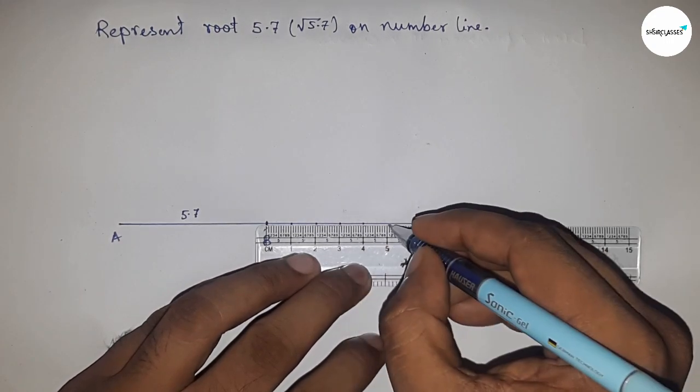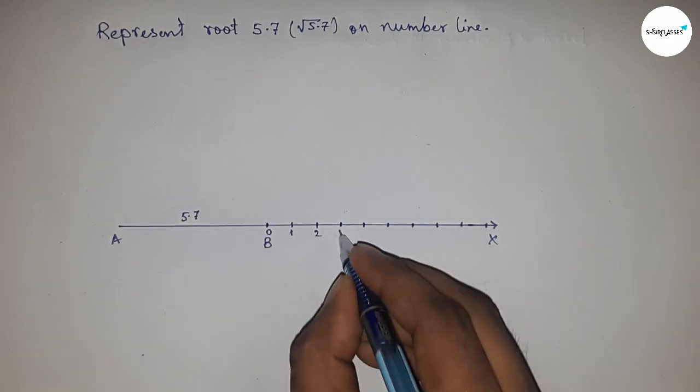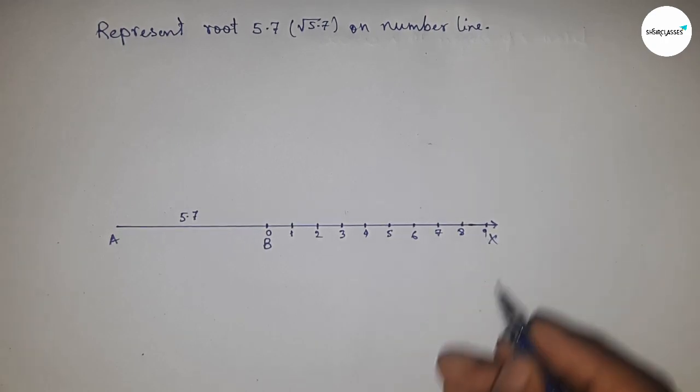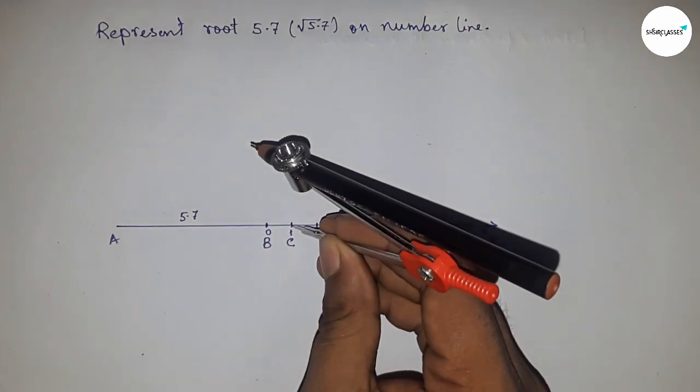So this is 0, 1, 2, 3, 4, 5, 6, 7, 8, and so on. We take this as point C. Next, we bisect the line AC.